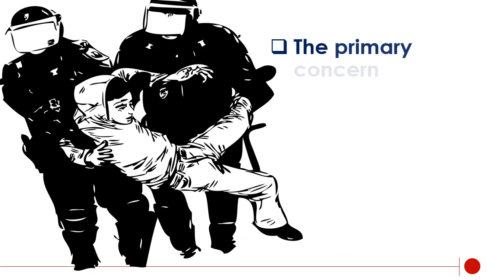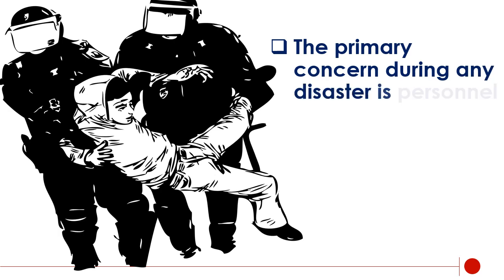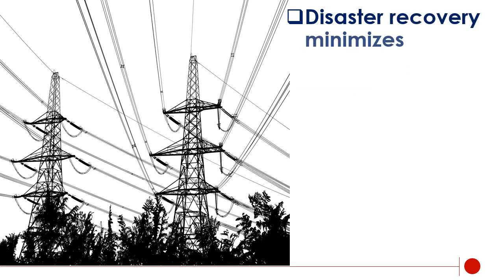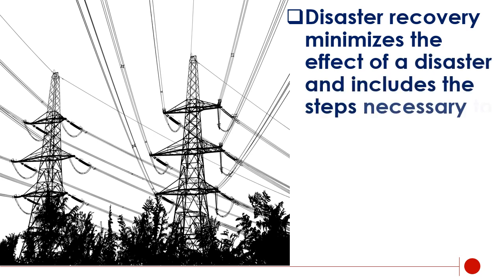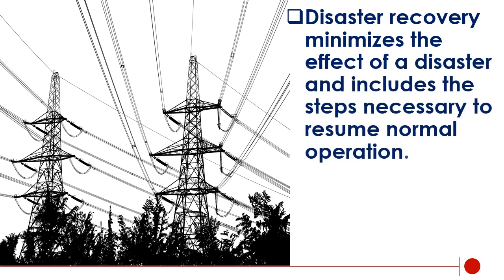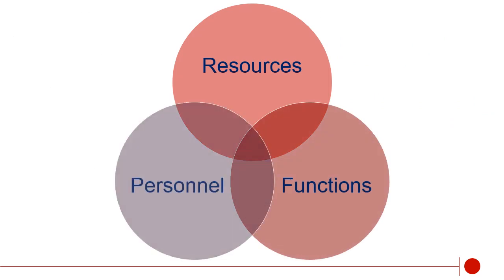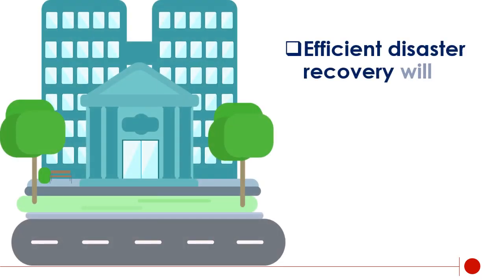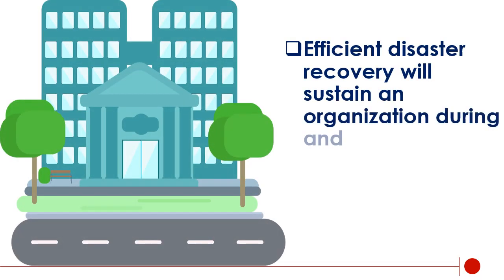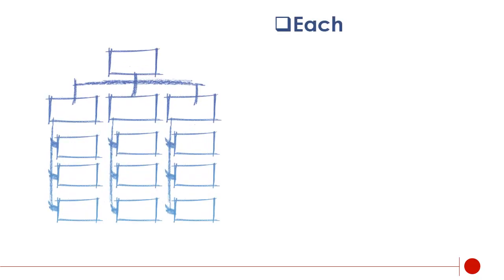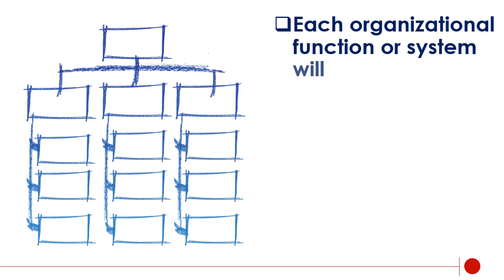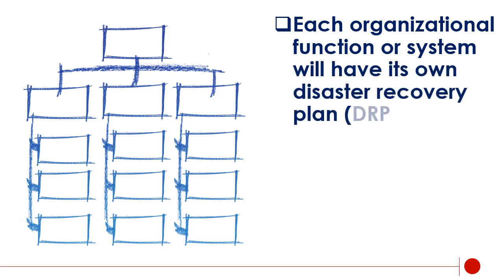The primary concern during any disaster is personnel safety. Disaster recovery minimizes the effect of a disaster and includes the steps necessary to resume normal operation. Disaster recovery must take into consideration all organizational resources, functions, and personnel. Efficient disaster recovery will sustain an organization during and after a disruption due to a disaster. Each organizational function or system will have its own disaster recovery plan, DRP.